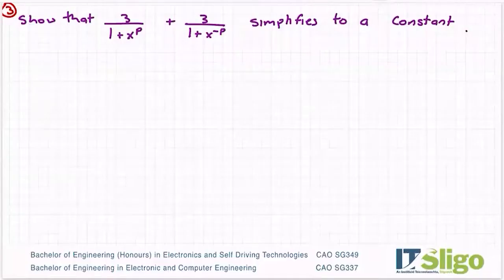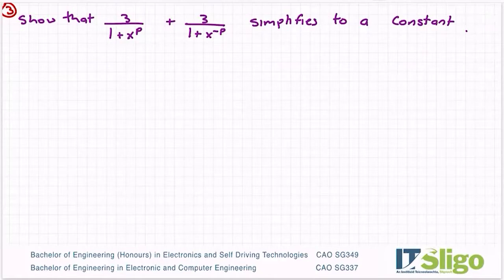Okay, question 3 in our revision set. Show that 3 over 1 plus x to the power of p plus 3 over 1 plus x to the power of minus p simplifies to a constant.